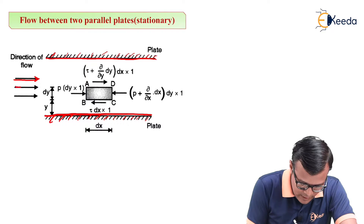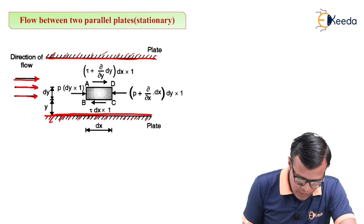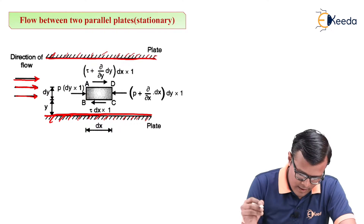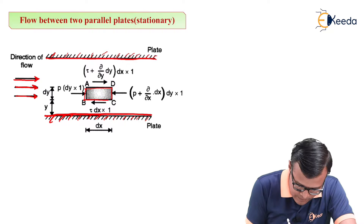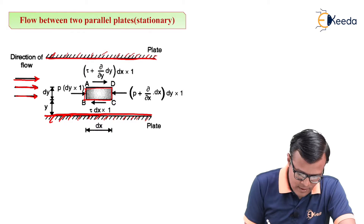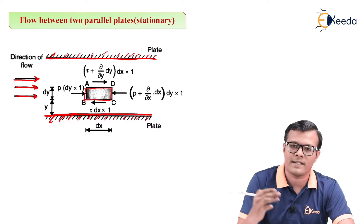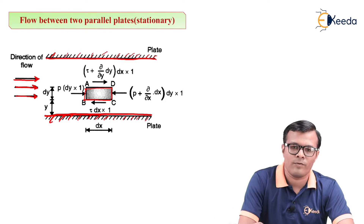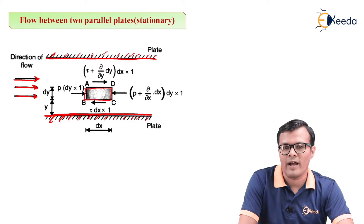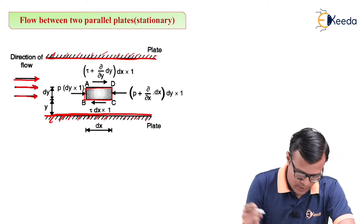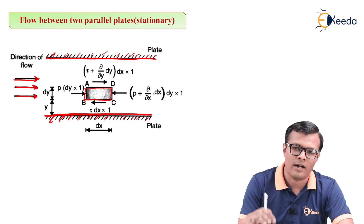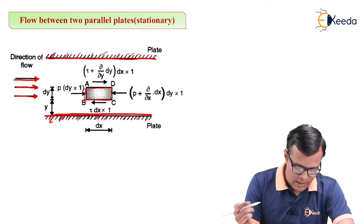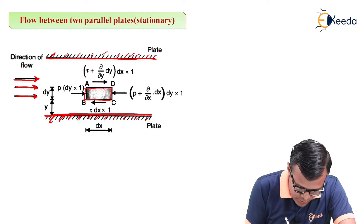For study purposes, we will consider an element ABCD. On this element ABCD there exist two types of forces: first is the pressure force due to pressure, and second is the shear force. The faces on which these forces are acting are also different, as shown in the diagram.